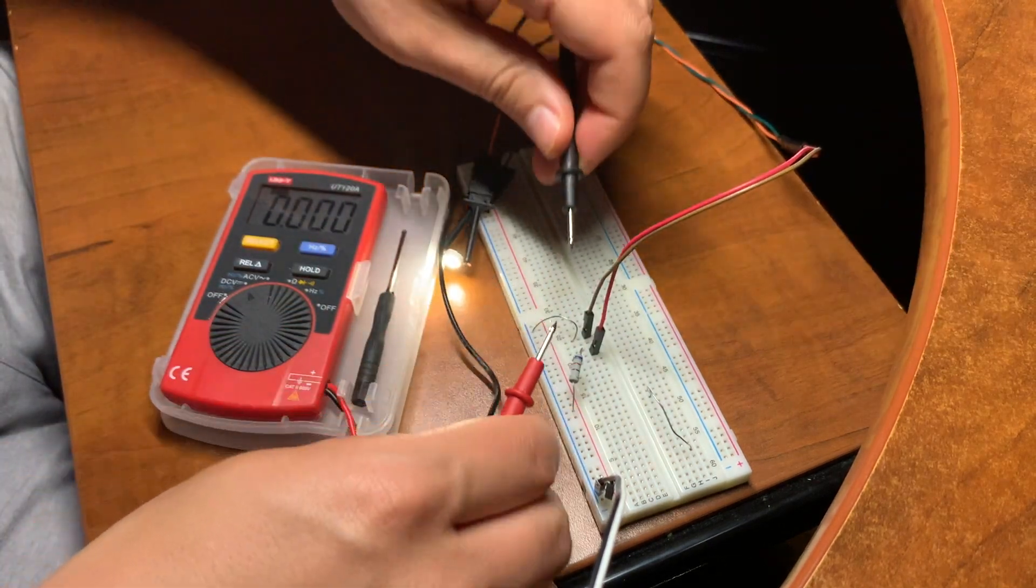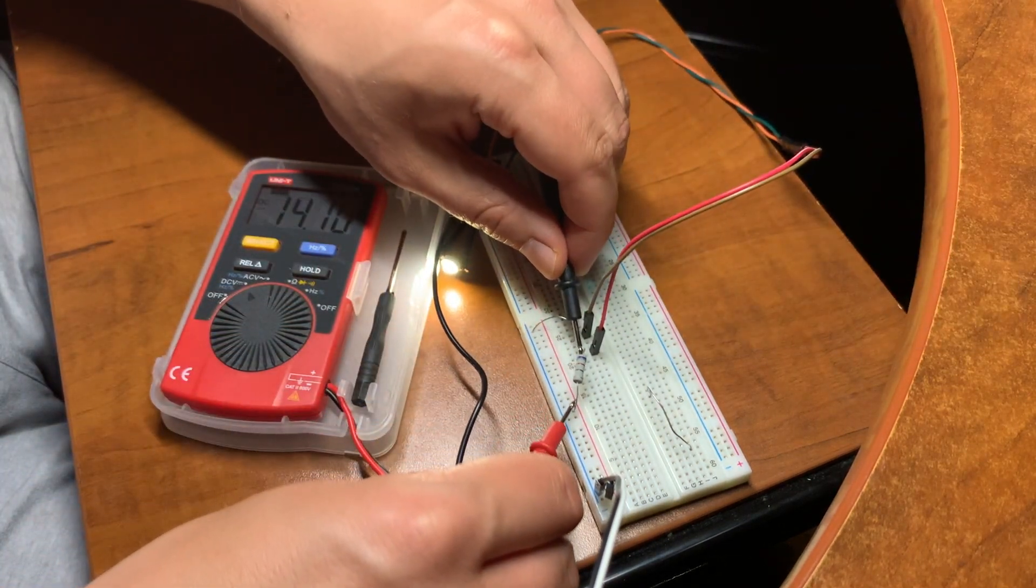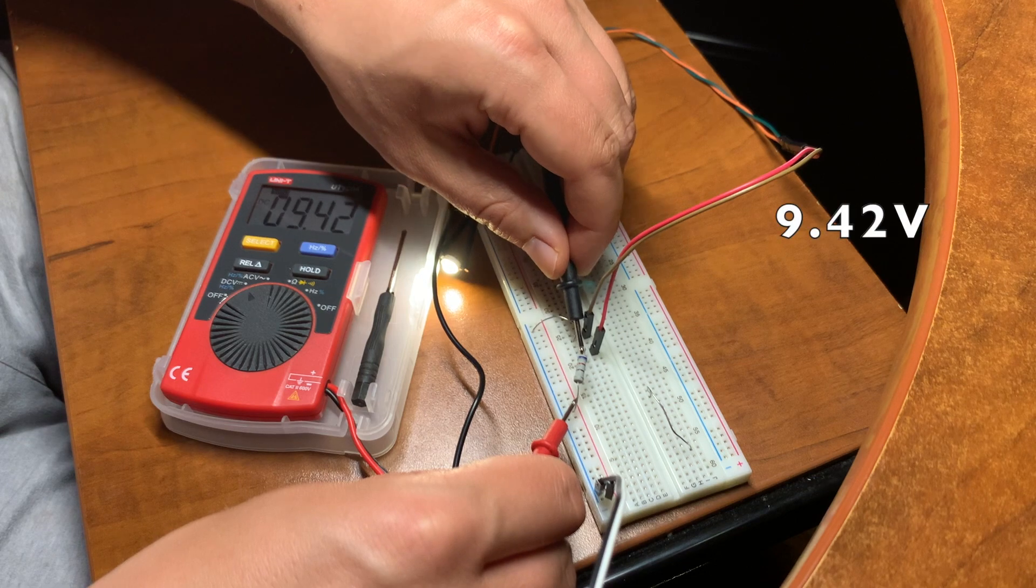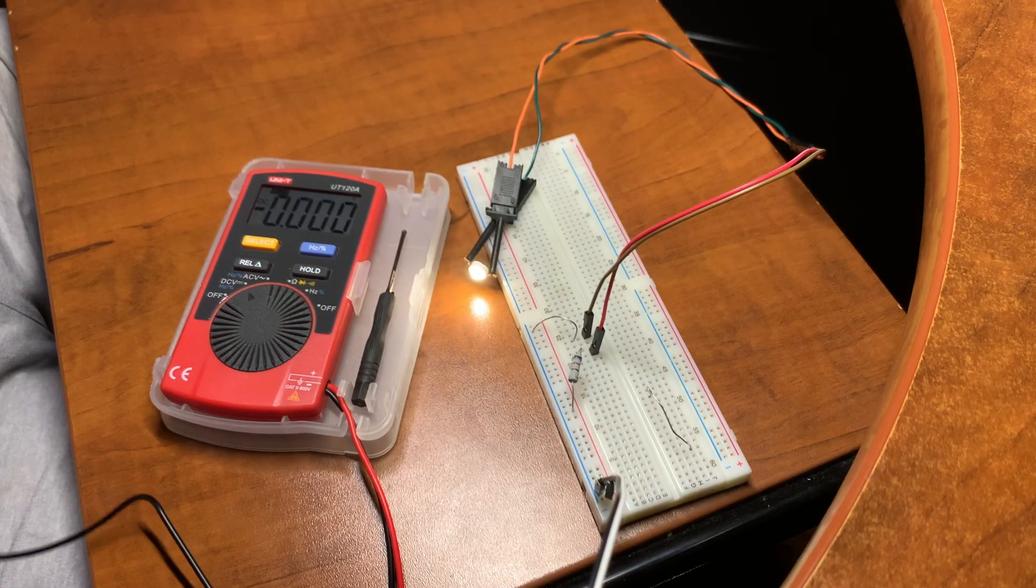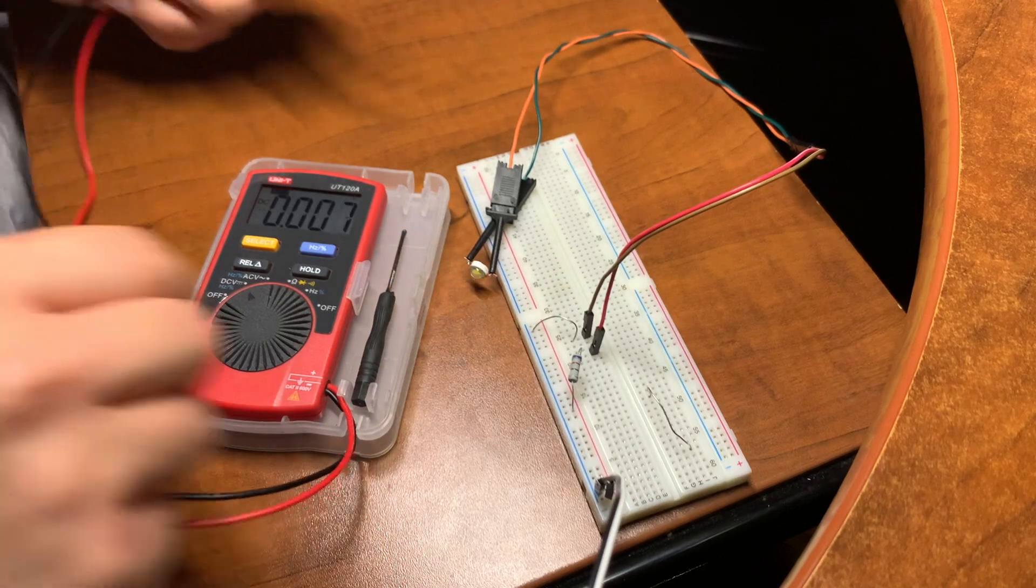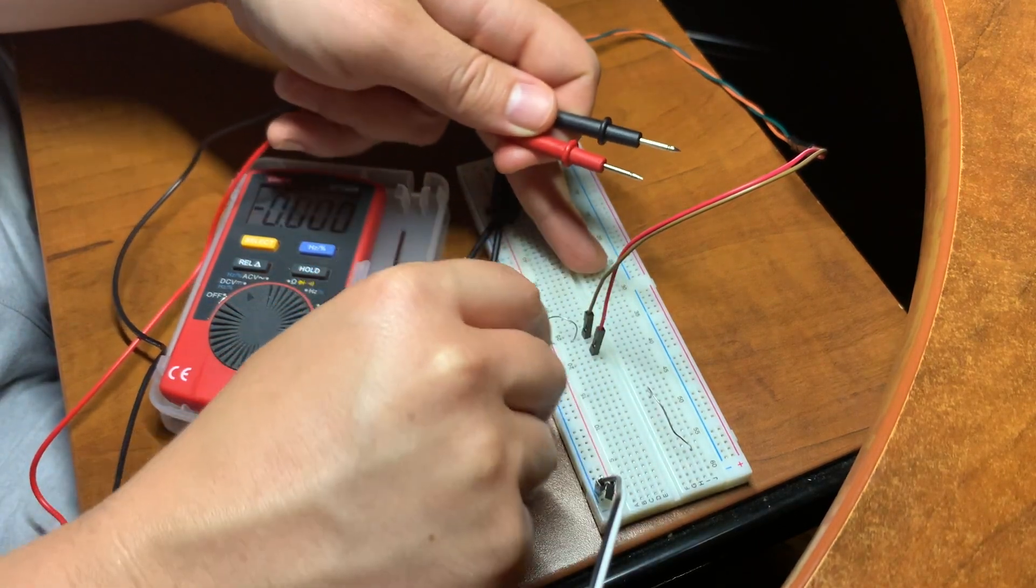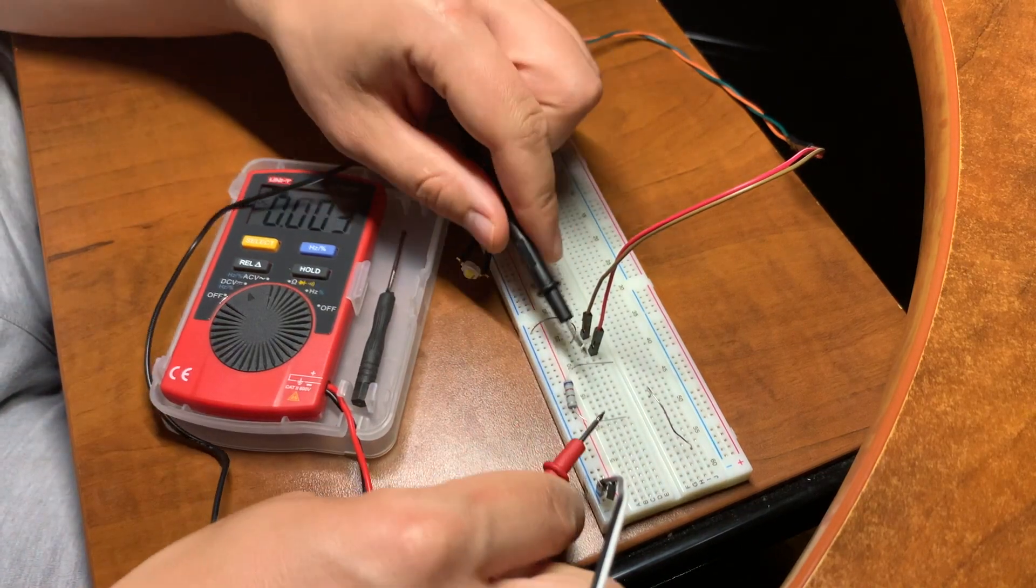All we need to do is measure the voltage drop across a known resistor. I said known, but I actually don't know the value. So let's measure it.